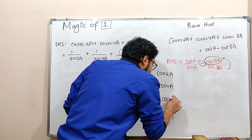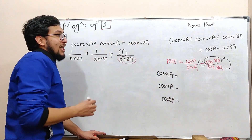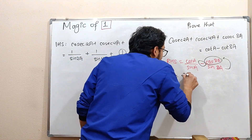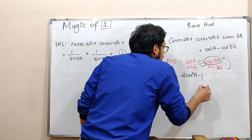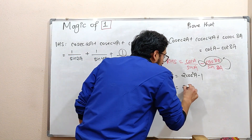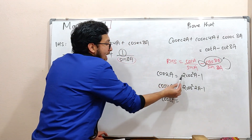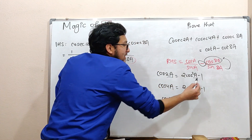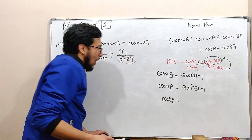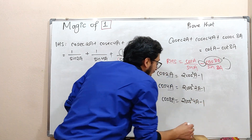For the 8A multiple angle, the answer uses cos. We apply 2 cos² A − 1, then 2 cos² 2A − 1, and continuing this pattern: 2 cos² 4A − 1. So cos 8A is expanded using the double angle formula repeatedly.